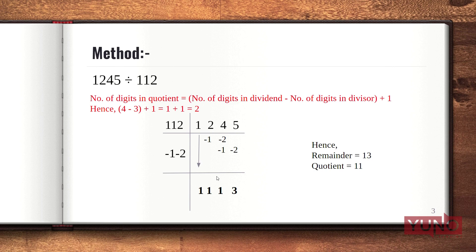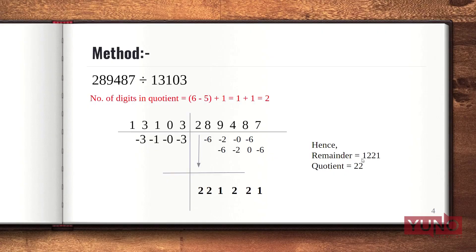Since we have 2 digits in our quotient, the leftmost 2 digits of the answer — 11 — form our quotient, and the remaining digits — 13 — are our remainder. Let's see another example with a bigger number.